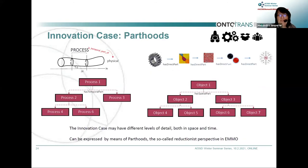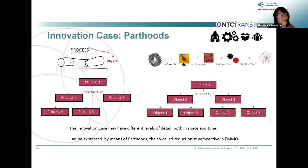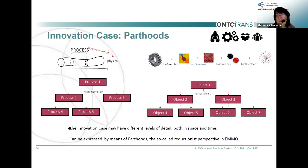We have beautiful examples about reaction mechanisms we can describe well. We have a temporal part: a process is a temporal part of a physical entity, so one process can have a second, third process, and so forth. Our objects — like the cogwheel — can be modeled with a continuum model, assigning properties; with a mesoscale model; an atomistic model; or quantum chemistry. Each object has a spatial part so they can be linked. The innovation case may have different levels of detail in space and time, expressed by parthood — the reductionist perspective in EMMO.